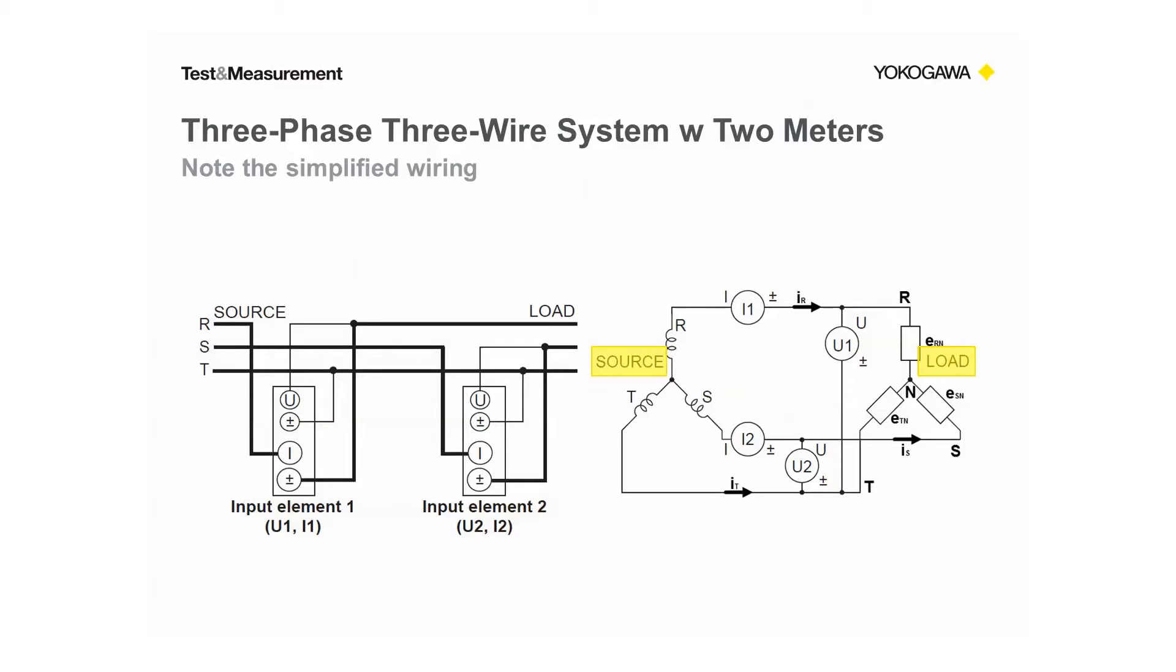Only two phases pass through the current inputs of the power meter on each of the two wattmeters. The third phase, phase T, is uninterrupted. There is no ammeter on it. You can see that we are measuring two voltages and two currents. That is to say that we have two wattmeters.